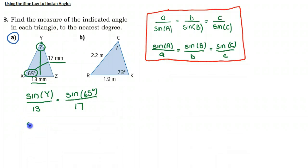So once I have the ratio, I can then say sine of Y is equal to the sine of 65 degrees all over 17 times 13. So therefore, Y is equal to the sine inverse of sine of 65 degrees all over 17 times 13.